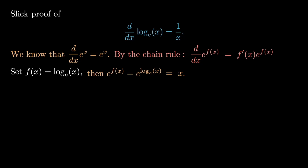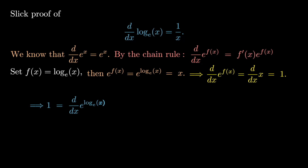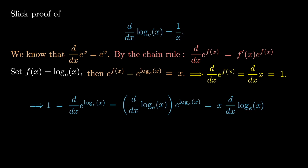If I now take the derivative of e to the f of x, that must be the same as the derivative of x, but the derivative of x is just 1. So we have that 1 is the derivative of e to the log(x), but by the chain rule this is just the derivative of the logarithm times e to the log(x). And e to the log(x) is again just x. So what we're left with is x times the derivative of the logarithm — and if 1 equals x times the derivative of the logarithm, the derivative of the logarithm has to be 1 over x. And that's it. That's the elementary argument.